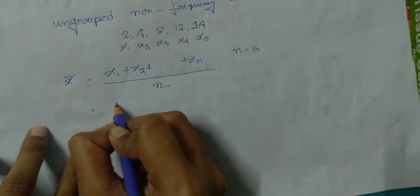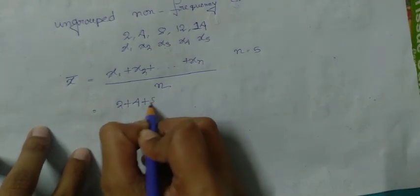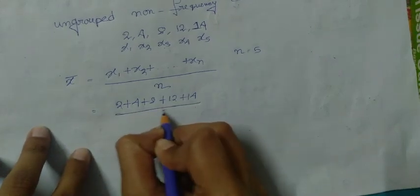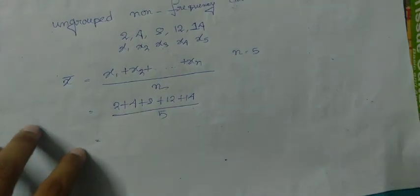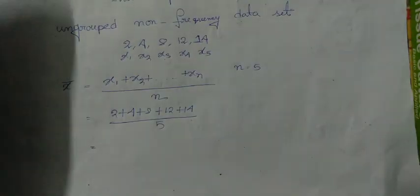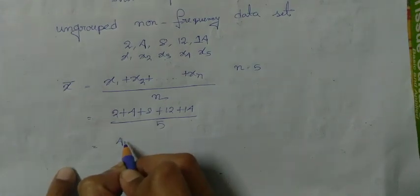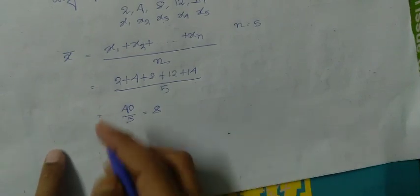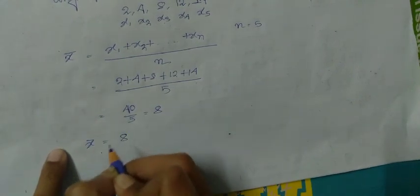So 2 plus 4 plus 8 plus 12 plus 14 by 5, so 40 by 5, so mean value or x bar is equal to 8.